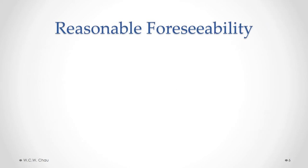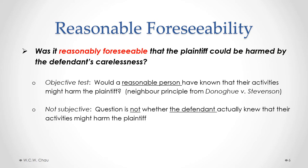From Donoghue and Stevenson, we get the principle of reasonable foreseeability. The question to be applied is: was it reasonably foreseeable that the plaintiff could be harmed by the defendant's carelessness? This is an objective test — we ask whether a reasonable person would have known that their activities might harm the plaintiff. It is not a subjective test; we are not asking whether the defendant — the person being sued — actually knew that their activities might harm the plaintiff.